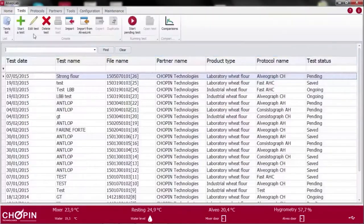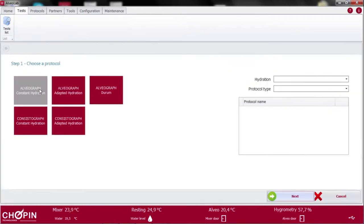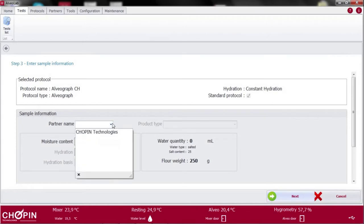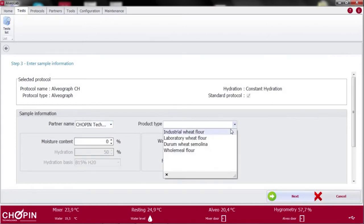In order to run a test, you need to configure the test within the software. Click on Test, then on Start a Test. Select your protocol. In this case, I will be demonstrating the standard test at constant hydration. Enter the name of the test, select a partner and a product, and indicate the water content of the flour.